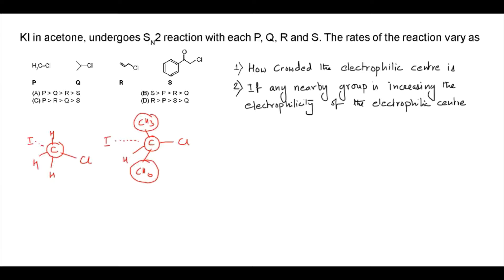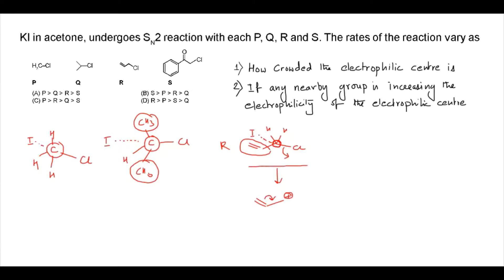This kind of SN2 reaction will not be favorable at this center, and there is no group which can increase the electrophilicity of the central carbon. Compound R is relatively less crowded — it has only two protons connected. The chlorine is the leaving group, and iodide will attack this center. There is one allyl group attached but it will not help increase the electrophilicity of this central carbon. In an SN2 reaction, no carbocation intermediate forms, so the double bond will not help in any way.